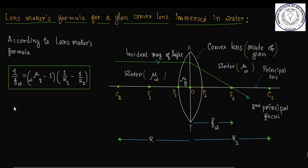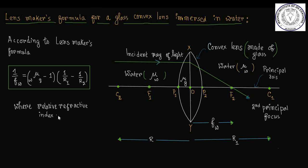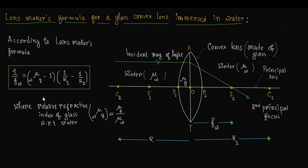Here, the relative refractive index of glass — which is the material of the lens — with respect to water is equal to w·μg, which is equal to μg divided by μw.